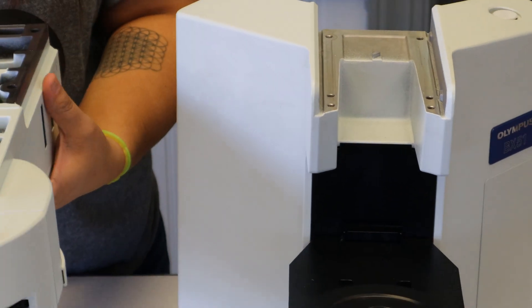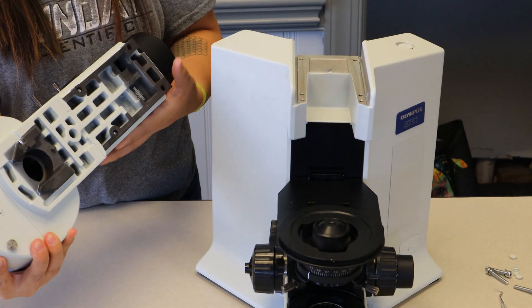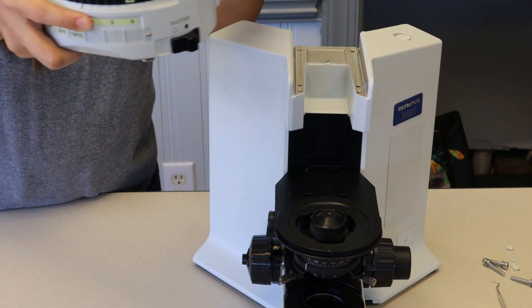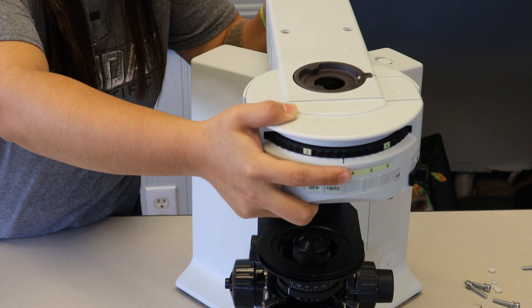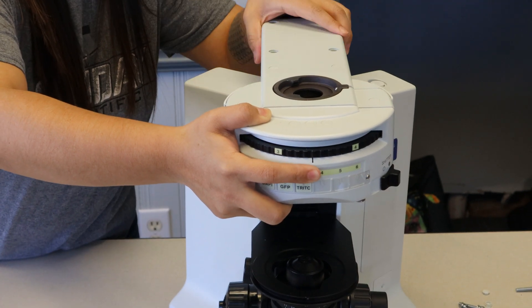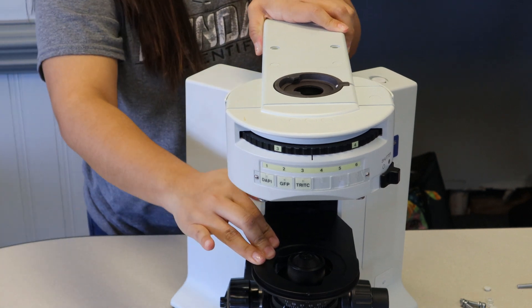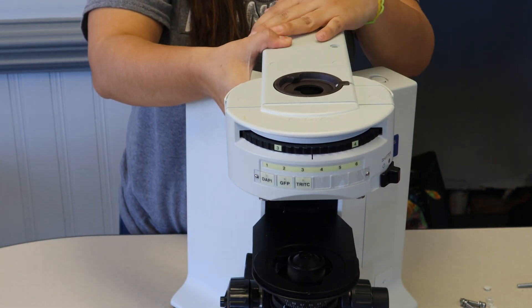So when you place the illuminator on top of the stand, you want to line those two up and then pull it to the back, to the right, or push it to the back and the right in your case. That way everything will line up as it's supposed to and everything will be aligned for when you start attaching your objectives and things like that.